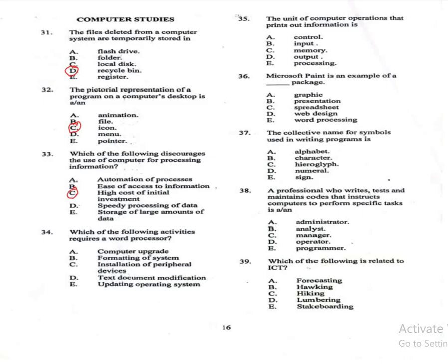Question 34: Which of the following activities requires a word processor? A: computer upgrade, B: formatting of system, C: installation of peripheral devices, D: text document modification, E: updating operating system. The correct answer is D, text document modification. Word processors are designed for creating and editing text documents.